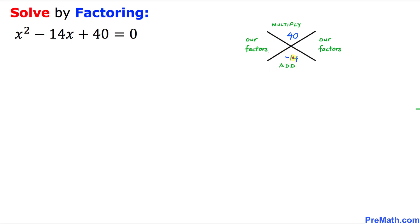In our next step we are going to find the factors of 40 such that if we multiply them we get 40, and if we add them we get negative 14. The possible factors are 4 and 10, and fixing the signs they become negative 4 and negative 10. As you can see, multiplying negative 4 and negative 10 gives positive 40, and adding them gives indeed negative 14.